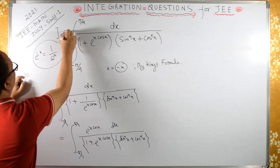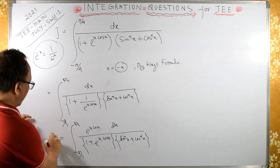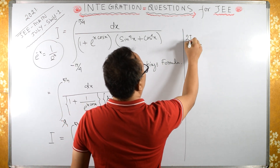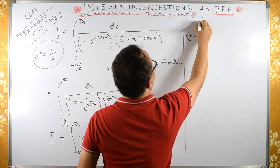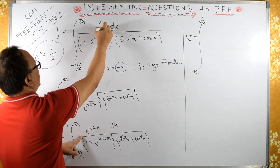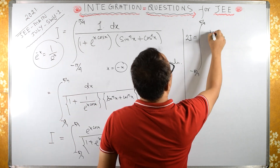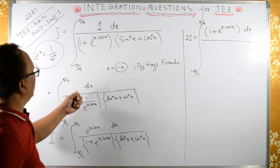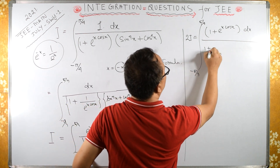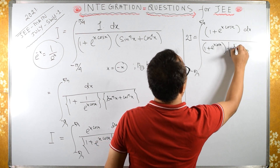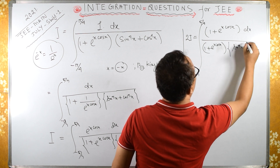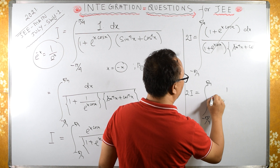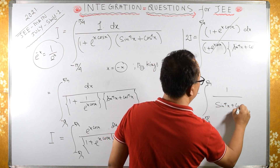Let us call the original integral I. The transformed integral after applying King's formula is also I. If I add these two, I plus I becomes 2I, which equals the integral from minus π/4 to π/4. Here I can factor out 1 from the numerator. The denominators (1 + e^x·cos x) cancel, and we get 2I equals the integral from minus π/4 to π/4 of 1 upon (sin⁴x plus cos⁴x) dx.